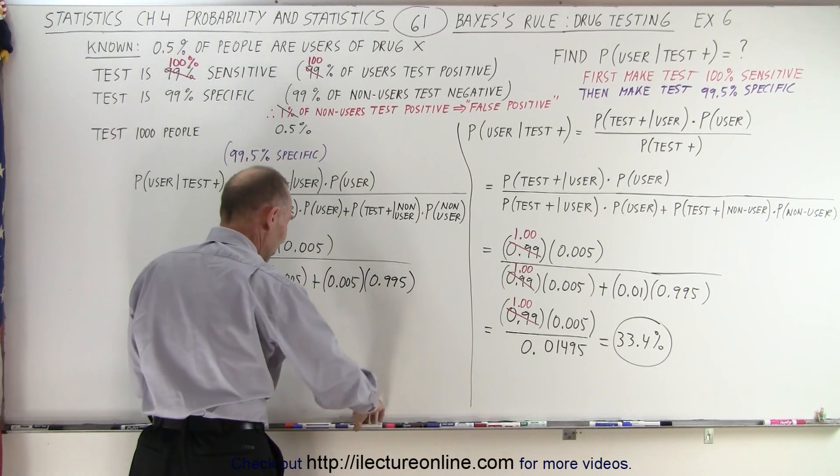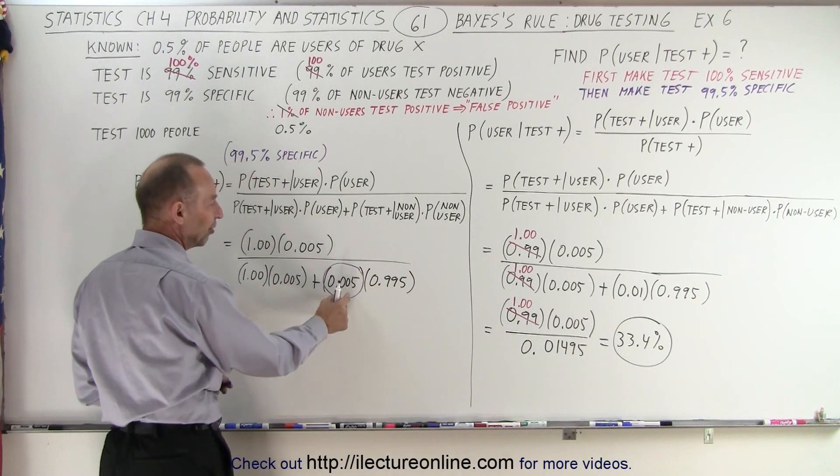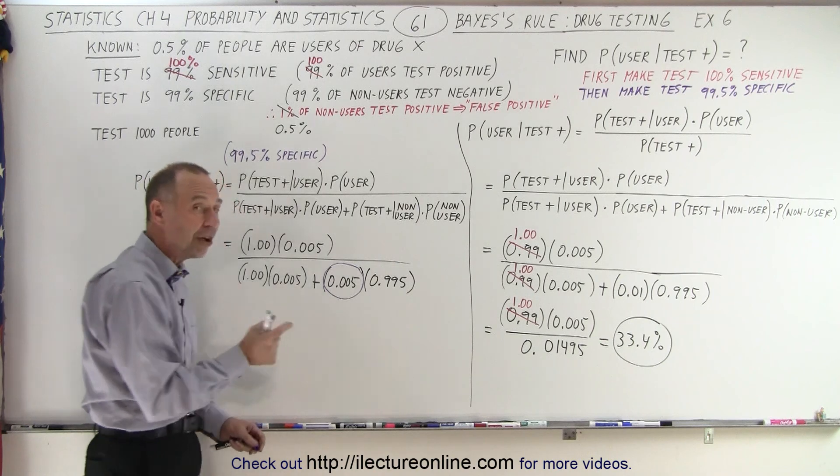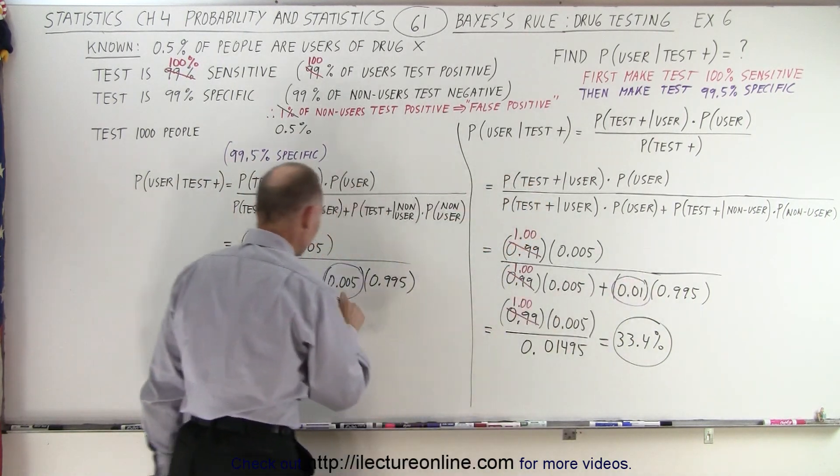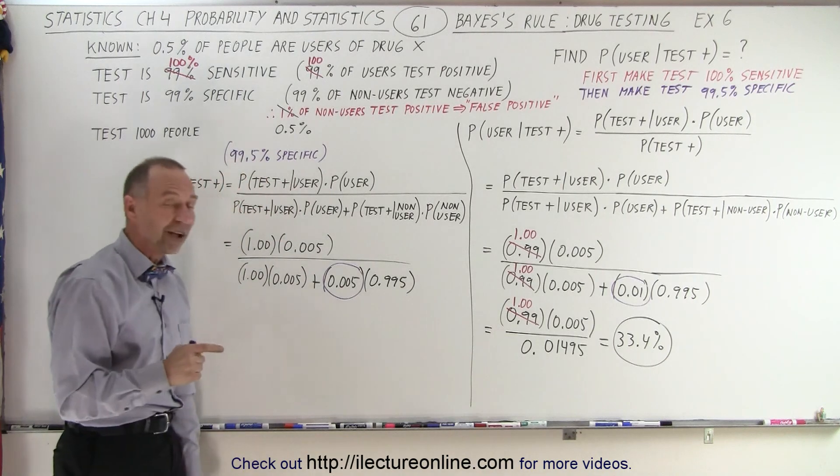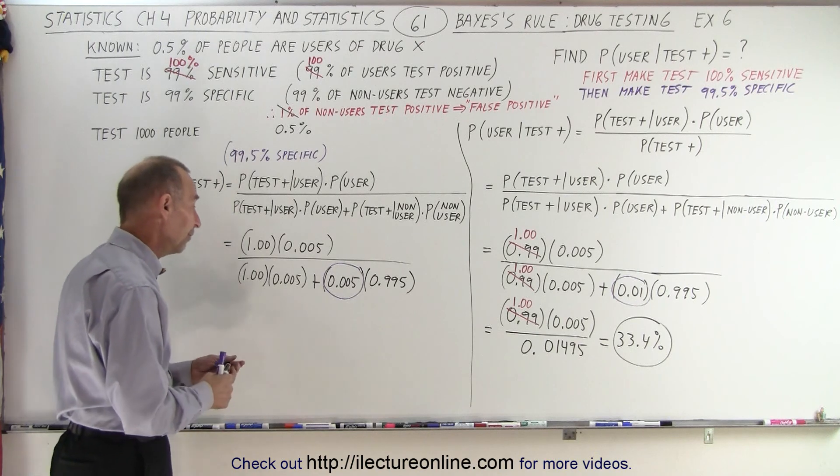So notice that it's this number right here that changed to 0.005. This is the percentage of false positives. So we went from 1% false positives to 0.005, which is 0.5% false positives, and that will actually make a big difference.